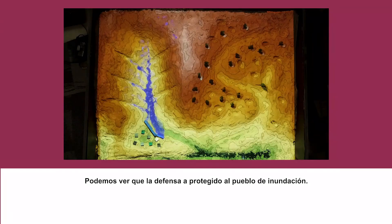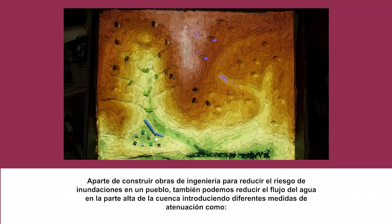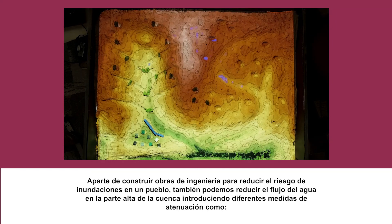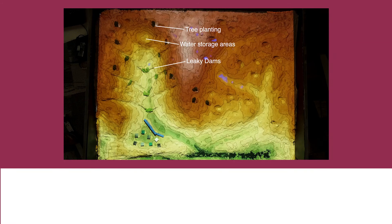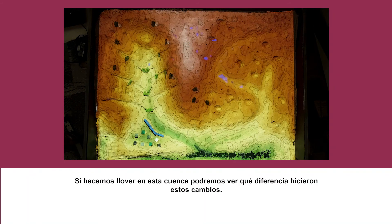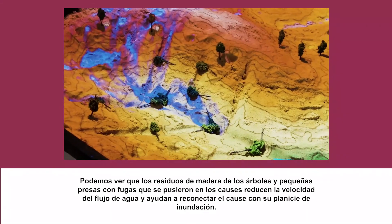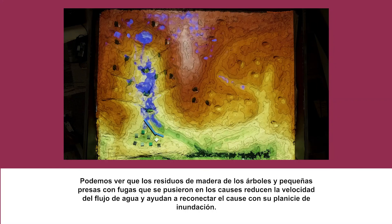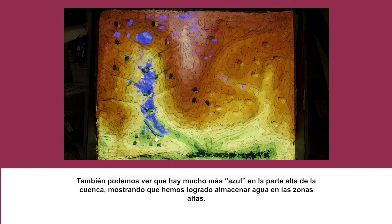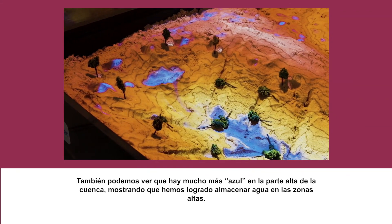You can see that the wall has now protected the settlement from flooding. As well as introducing engineered defences downstream, we can also slow the flow of water in the upstream catchment areas by introducing measures such as creating storage areas, introducing leaky dams, and planting trees. Raining on this catchment again, you can see that the woody debris and leaky dams are slowing the flow, reconnecting the floodplain to the channel, and there's quite a lot of blue in the upland areas showing that we've managed to store water further upstream.